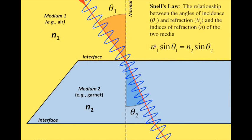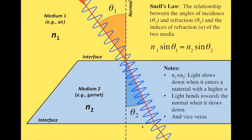Snell's law states that the refractive index of medium 1 times the sine of theta 1 equals the refractive index of medium 2 times the sine of theta 2. For a case where n1 is less than n2 — like air entering a garnet — light slows down and bends towards the normal. If the opposite were true and n1 were greater than n2, light would speed up and bend away from the normal.